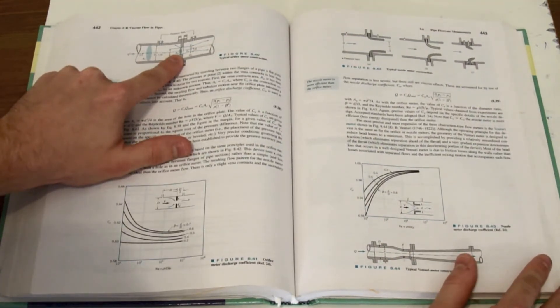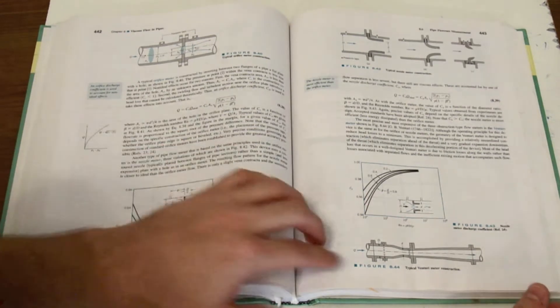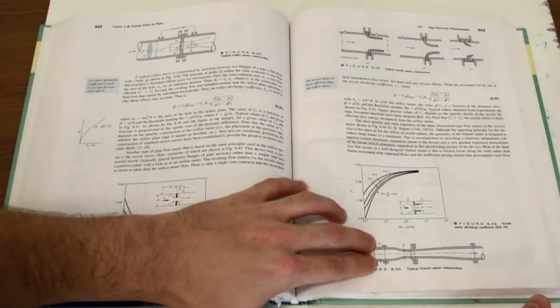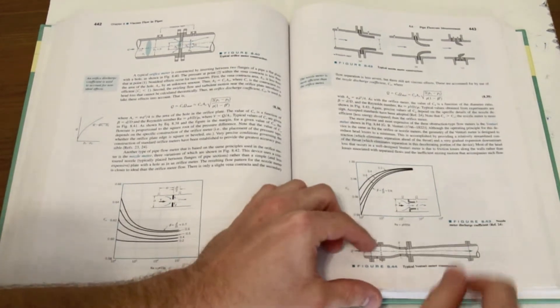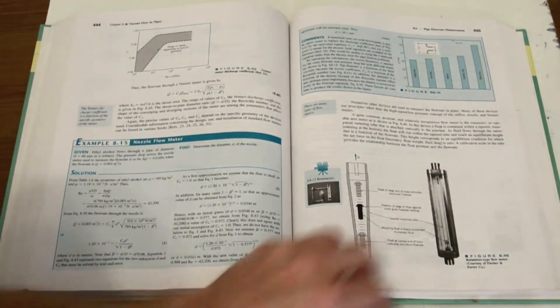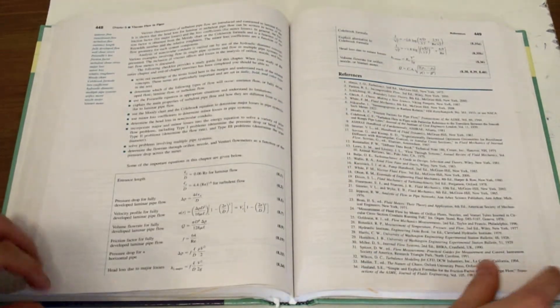Another orifice plate and here's another constriction here where we're going from a larger diameter to a smaller diameter back in order to find the differential pressure. So what are we noticing?